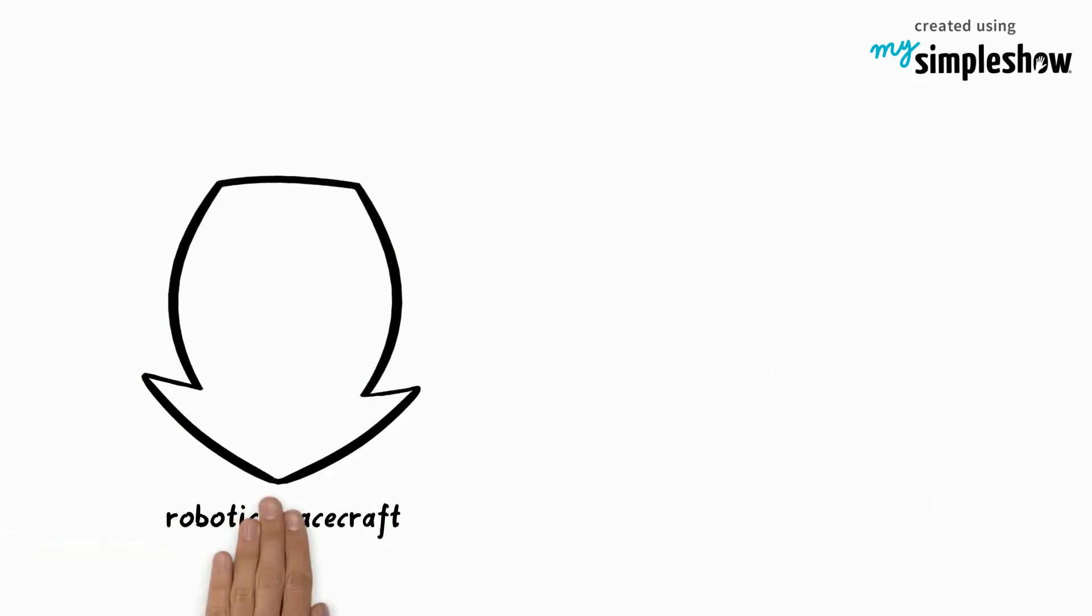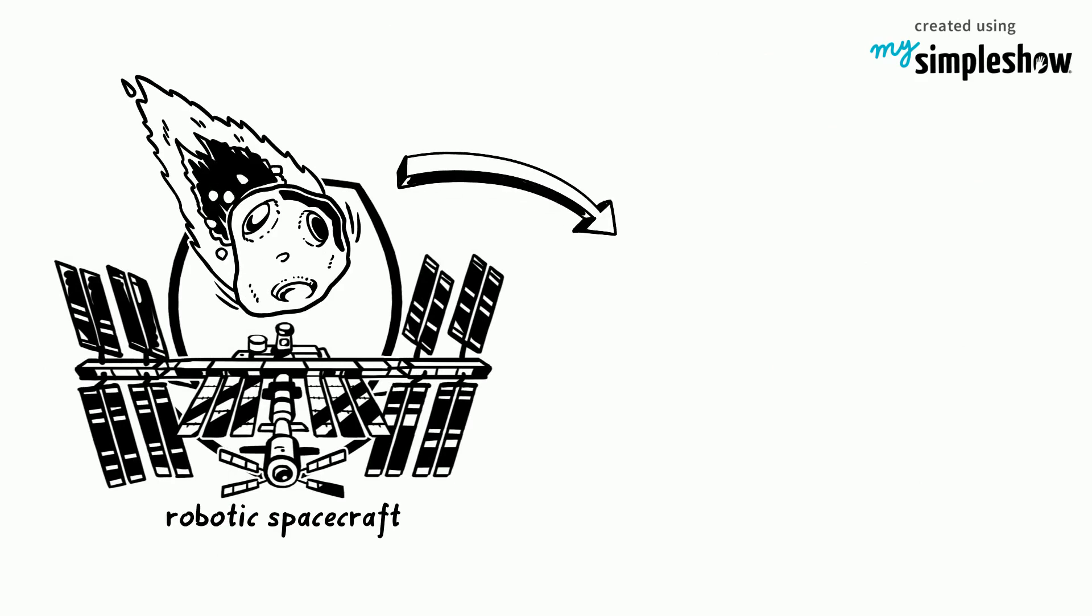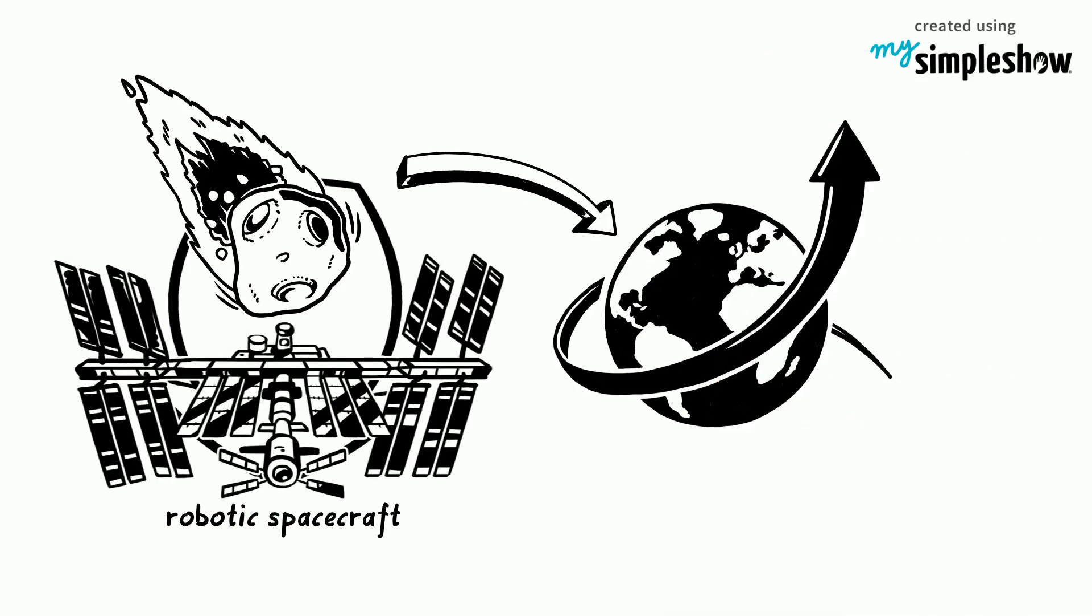The robotic spacecraft will drag a large, flexible cover around the asteroid. It will then haul the asteroid back to an orbit around the moon.